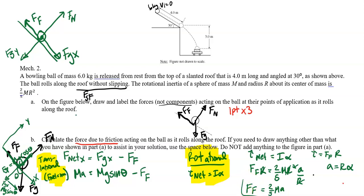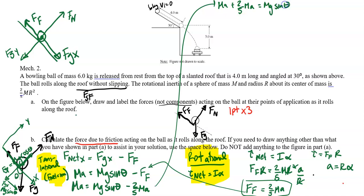I'm going to plug this F_F into the translational equation. So we have MA equals MG sin theta minus 2/5 MA. Let's solve this for A. Adding 2/5 MA to both sides gives 7/5 MA equals MG sin theta. So A will be 5/7 G sin theta.